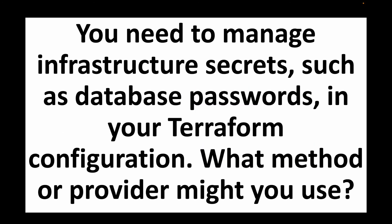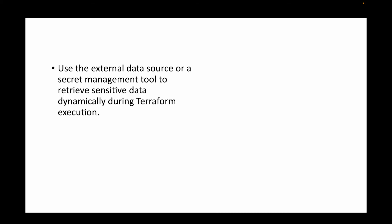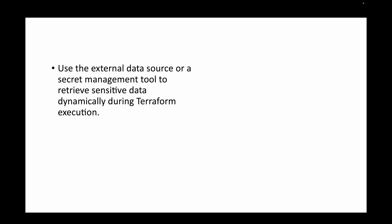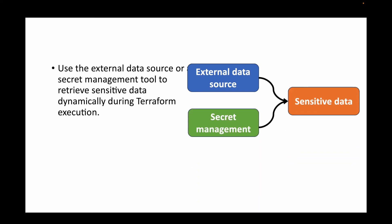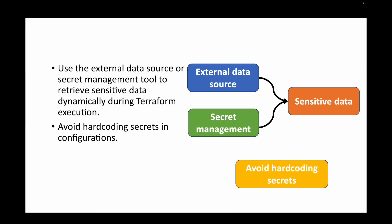The next question is: you need to manage infrastructure secrets such as database passwords in your Terraform configuration — what method might you use? As discussed, sensitive data should never be kept within a Terraform config file. Use an external data source or a secret manager — AWS Secrets Manager or HashiCorp Vault — to store sensitive data. Avoid hard-coding secrets in configuration files, as it is always a risk: if the code is exposed on a public repo, anyone can see that sensitive data.